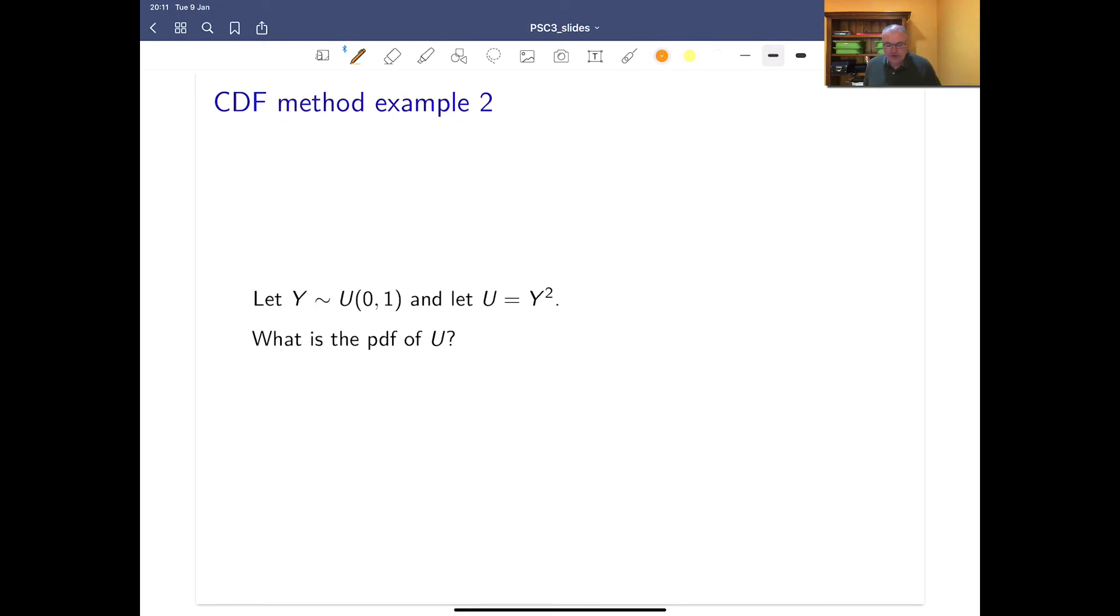So next, we've got another one. Y equals a uniform(0,1), and U equals Y squared, what is the PDF? Well, first of all, let's remind ourselves what f of Y is. It's going to be 1 when Y lies between 0 and 1, and it's going to be 0 elsewhere. If you're not sure about that, go and look at your lecture on uniform.